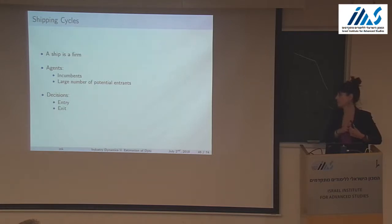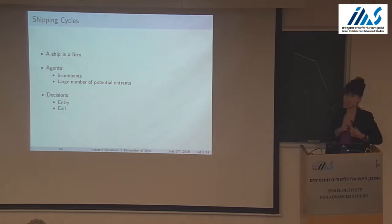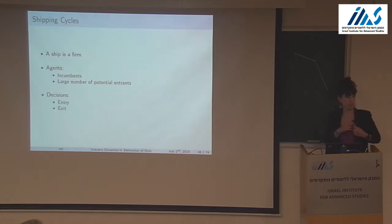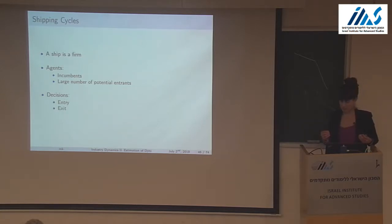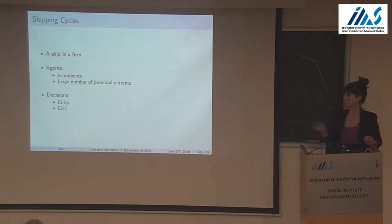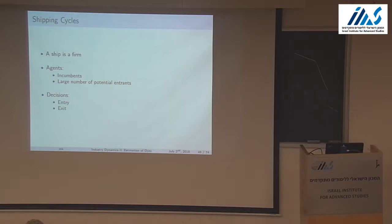All that happens in the model is firm entry and exit — a ship is a firm. There are incumbents and potential entrants deciding whether to exit, and a free entry condition determines how many new ships come in every year. You have to wait a number of years until you actually become an incumbent, and we use resale prices as direct measurements of value functions to estimate all the main primitives.